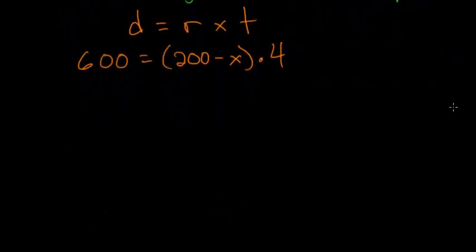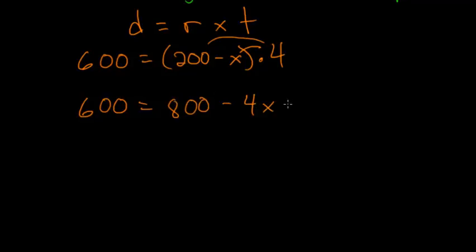If we solve this equation, we can figure out the speed of the headwind. All we have to do is distribute the 4 to the 200 and to the x, giving us 800 minus 4x. We can add 4x to each side, so we have 4x plus 600 equals 800.